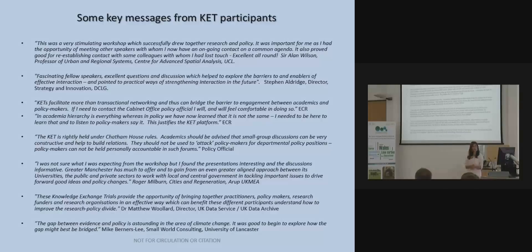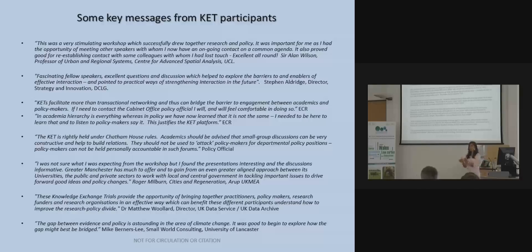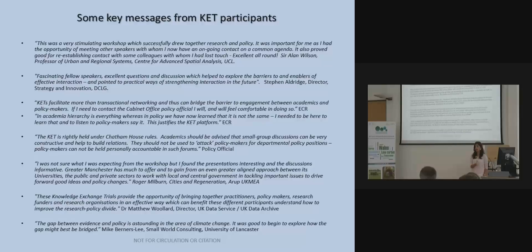Bad policies happen when research wasn't understood, when there wasn't good communication with academics, or when research was misinterpreted. The objective has to be that we're trying to solve the same problems, even if we don't see them the same way. One key takeaway for universities and research councils: policymakers generally get what they want from academics, but academics don't always see what they got out of it. We need to find ways to communicate how research was used — whether it made it into a submission, a speech, or an internal discussion.